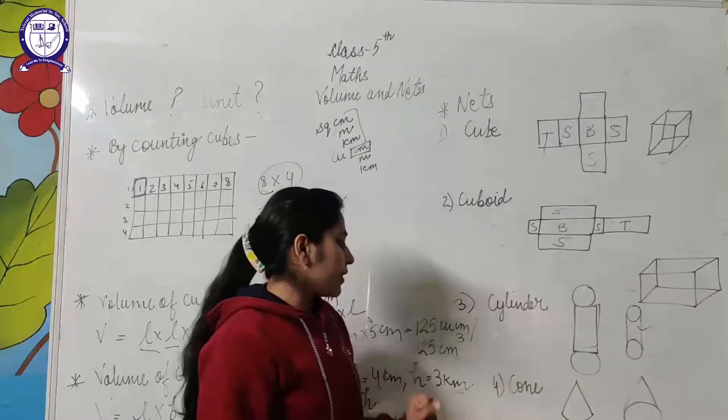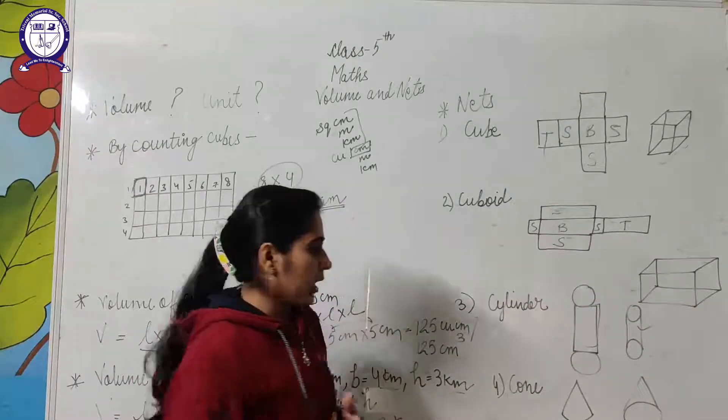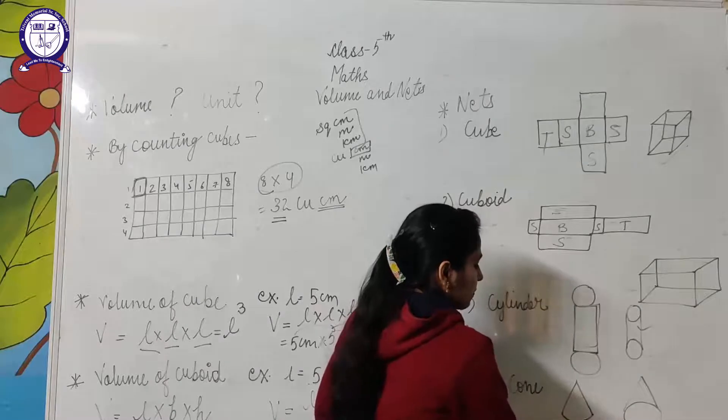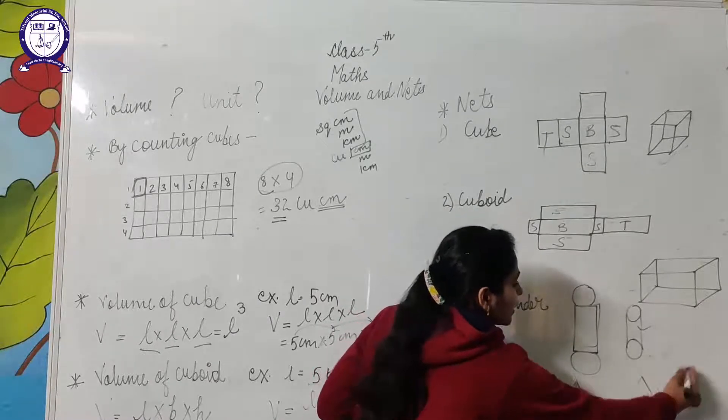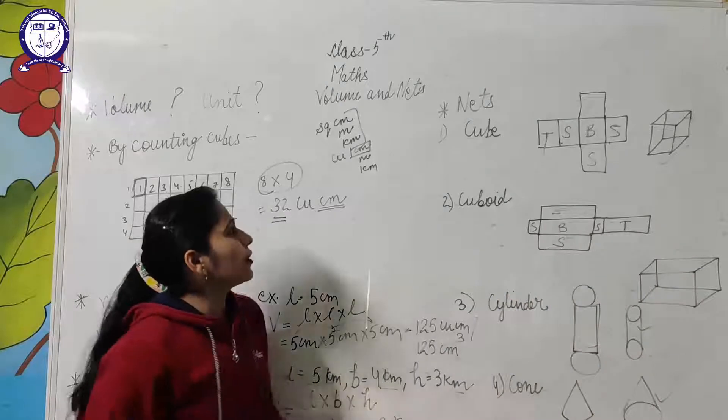In the case of the cone, we have one circle and one triangle. After closing this bottom part, we will get a figure like this. So this was about volume and nets.